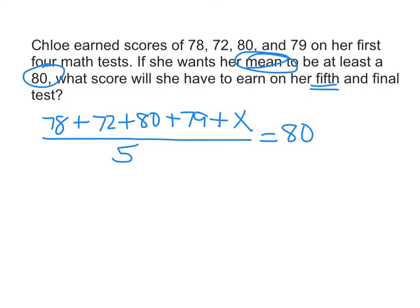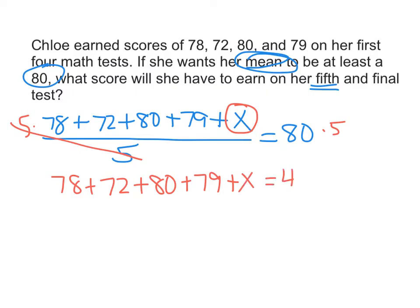So now we just need to solve this. To solve for X or get X alone, we need to do the opposite of dividing by five, which is to multiply both sides by five. So when I do that, these five cancel, and I get 78 plus 72 plus 80 plus 79 plus X equals 400.